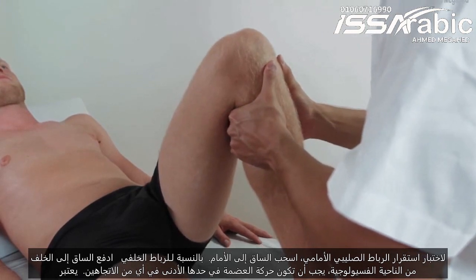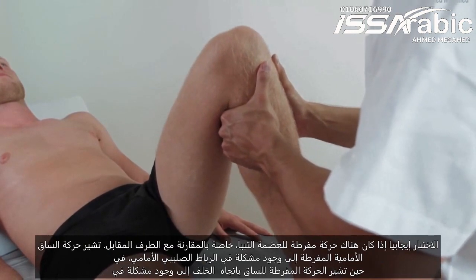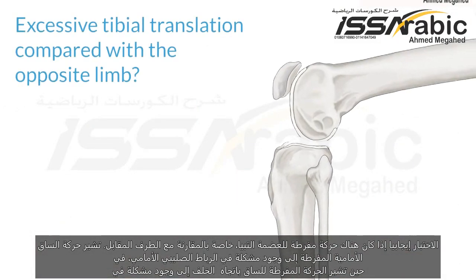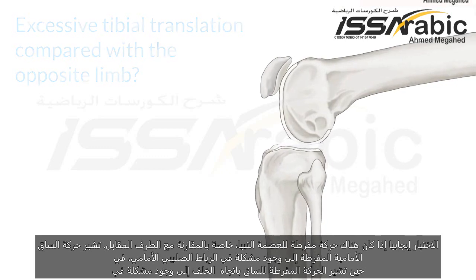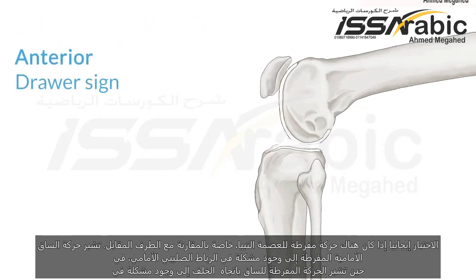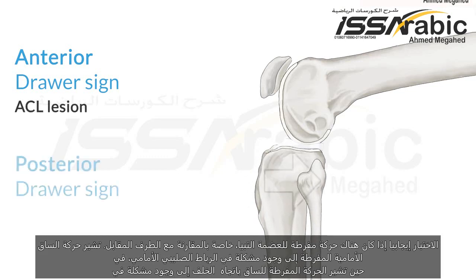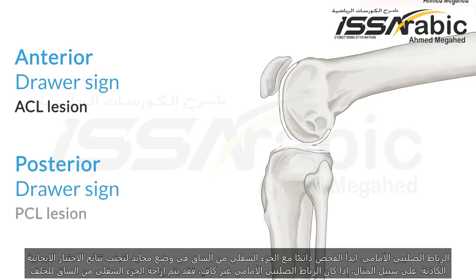Physiologically, tibial translation movement should be minimal in either direction. The test is considered positive if there is excessive tibial translation, particularly in comparison to the contralateral limb. Excessive anterior tibial translation indicates a lesion of the ACL, whereas posterior translation suggests a lesion of the PCL.